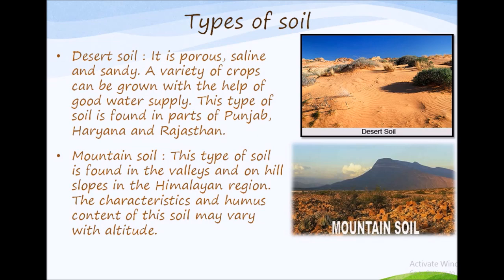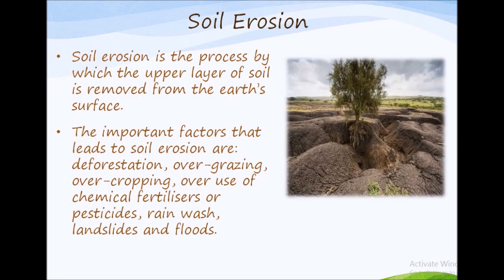Now let's discuss soil erosion. Soil erosion is the process by which the upper layer of soil is removed from the earth's surface. It happens because of both human and natural factors. The important factors that lead to soil erosion are deforestation, overgrazing, overcropping, overuse of chemical fertilizers or pesticides, rain wash, landslides and floods.